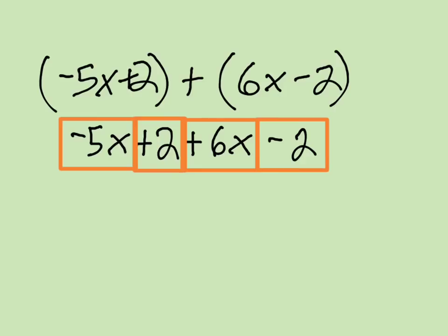So we've got our negative 5x and our plus 6x — that gives us 1x. But we don't write the 1; we don't write that coefficient of 1. So we have x. And then we have plus 2 and minus 2, which is 0, and we don't write plus 0. So this whole thing actually just turns into x, which is kind of cool. That mess up there simplifies to x. And that's it for adding linear expressions.